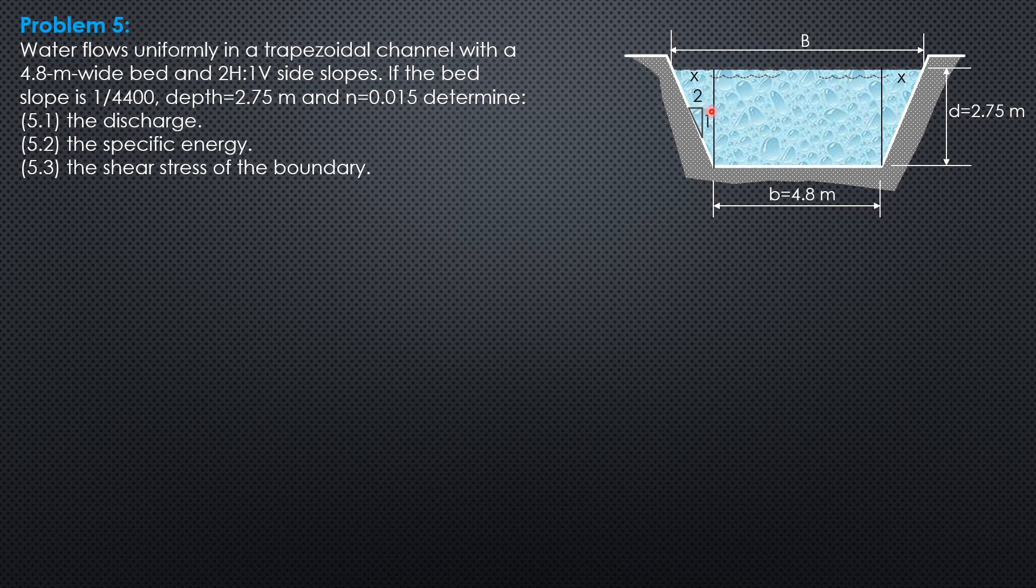Slope of the side is 2 horizontal to 1 vertical. So I'll call this x, the top width is b. Width at the bed is 4.8 meters and the depth of flow 2.75.